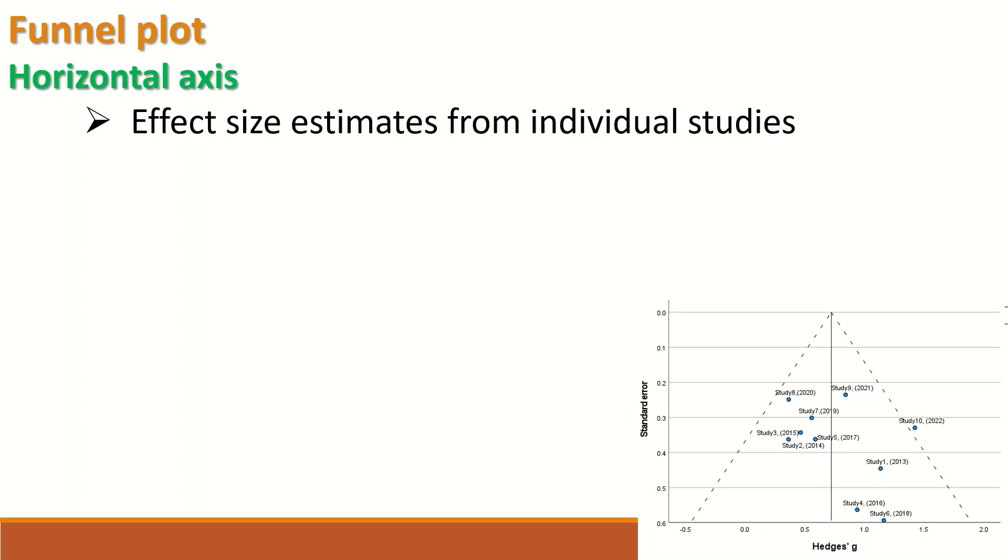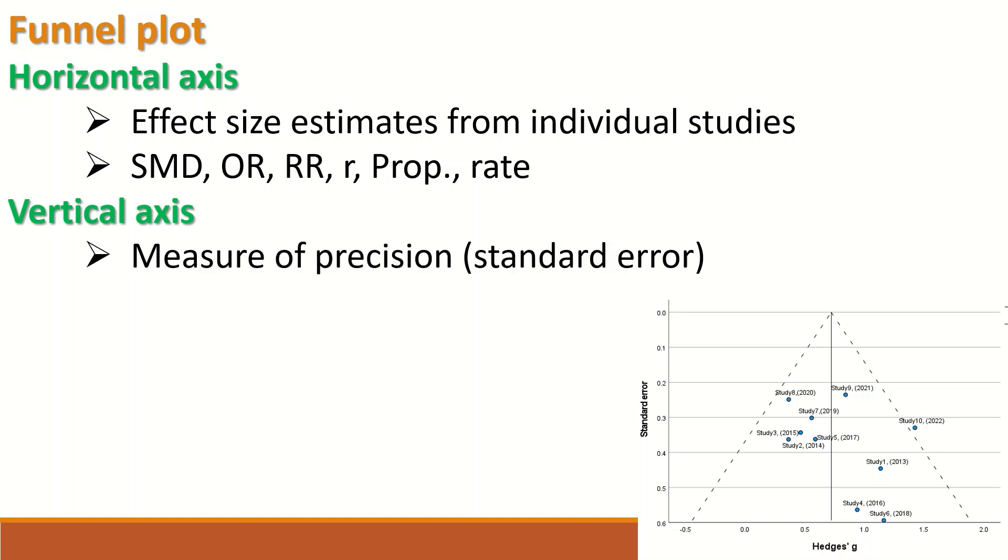To recap, funnel plot on the horizontal axis: the effect size estimate from each individual study is plotted, such as SMD or OR or RR or proportion or rate or correlation. On the vertical axis is the measure of precision. In this case, it's the standard error.